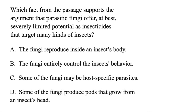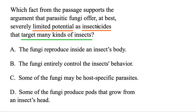Sometimes you don't even have to read the passage to get the answer. The question asks which fact from the passage supports the argument that parasitic fungi offer at best severely limited potential as insecticides that target many kinds of insects. Option A: the fungi reproduce inside an insect's body — that would actually be helpful as an insecticide, so nothing limiting there. Option B: the fungi entirely control the insect's behavior — that seems really helpful for an insecticide, so there's nothing limiting its potential. B is out.